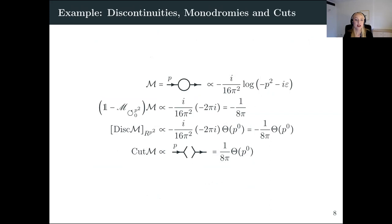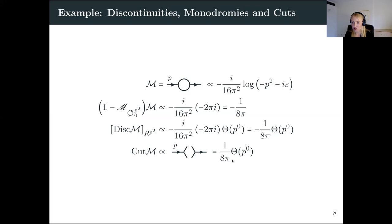To illustrate with a simple example before discussing cuts: I take a one-loop bubble diagram. The term we care about is proportional to log of minus p-squared minus I-epsilon. The monodromy operator acting on this amplitude gives minus 1 over 8-pi, because I get a 2-pi-i from this log. We can compare that to the discontinuity, defined only on the slice R_{p^2}, and the cut is also computed where the energy of the incoming particle is positive. The discontinuity equals minus the cut, as in the usual cutting rules.